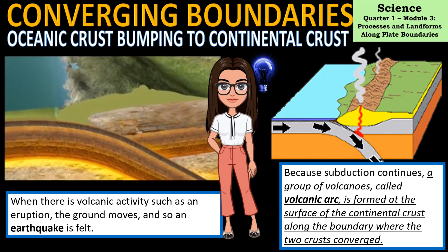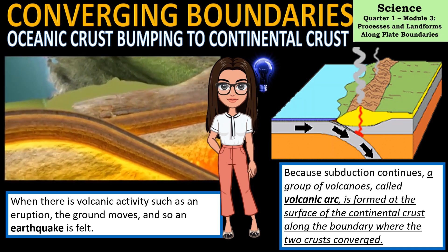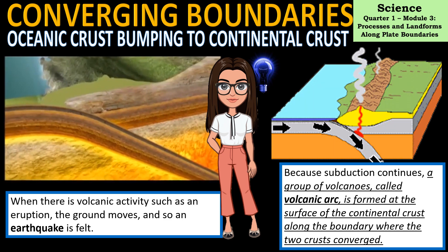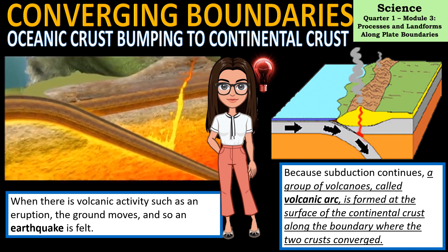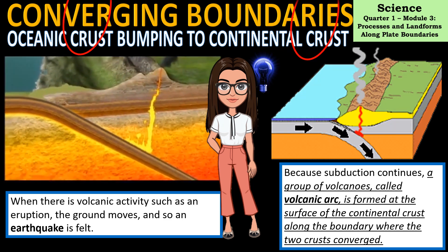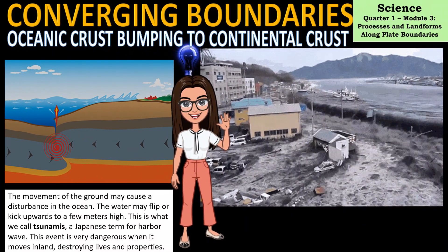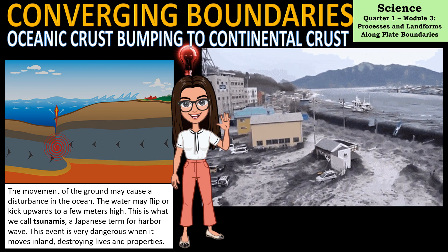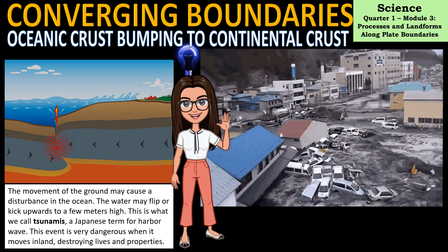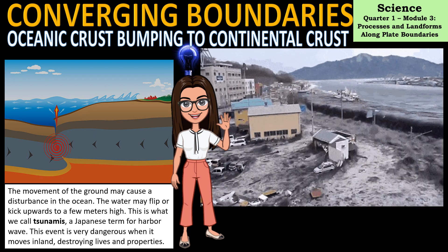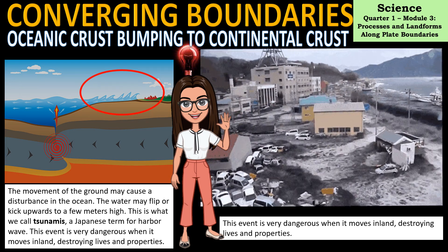When there is volcanic activity such as an eruption, the ground moves and an earthquake is felt. Because subduction continues, a group of volcanoes called a volcanic arc is formed at the surface of the continental crust along the boundary where the two crusts converged. The movement of the ground may cause a disturbance in the ocean — the water may flip upward several meters high — this is what we call a tsunami, a Japanese term for harbor wave, which is very dangerous when it moves inland.